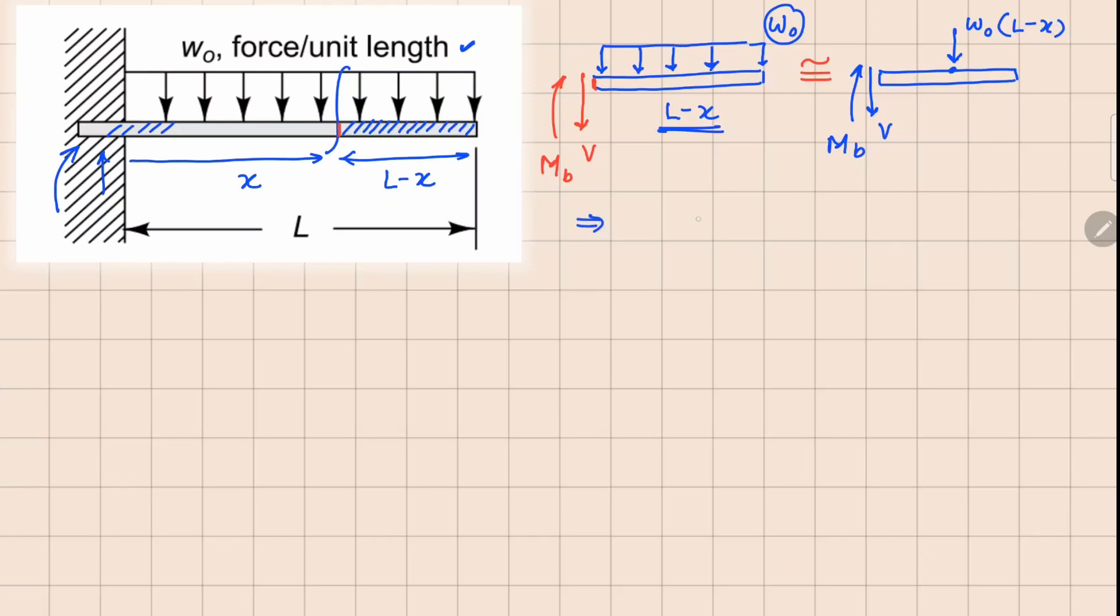Very easy, you can see that your V is balancing in this force, it needs to be minus w_0(L minus x). And your M_b, if I take moment about this point, these distances are going to be same, so we are going to have w_0(L minus x), this is the force, and the distance is going to be (L minus x) divided by 2, and since they are in the same sense this has to be negative.